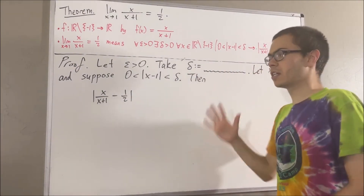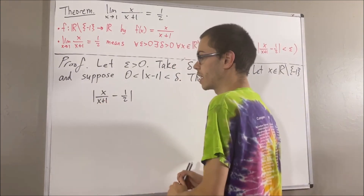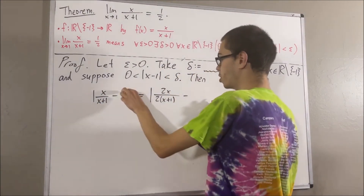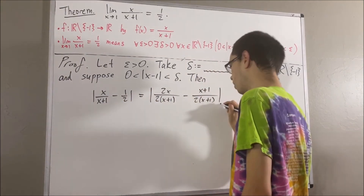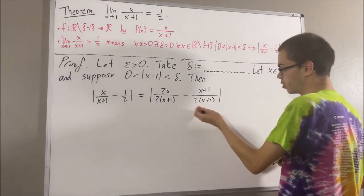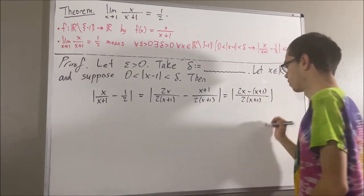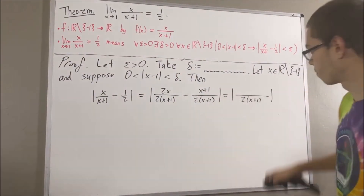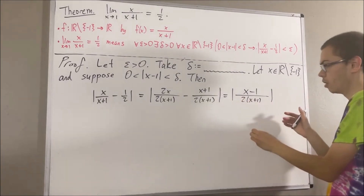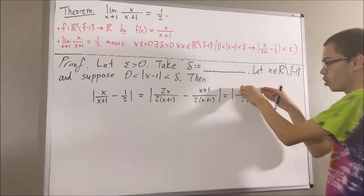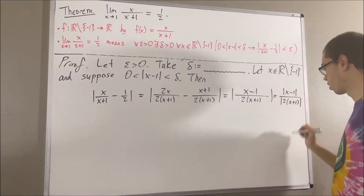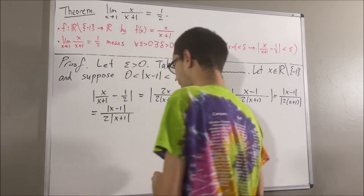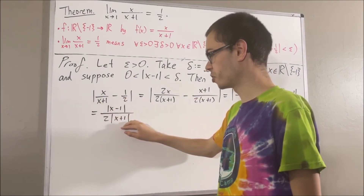Now to start, let's combine these two fractions into a single fraction. To do that, we'll multiply both the numerator and denominator of the first term by 2, and we'll multiply both the numerator and denominator of the second term by x plus 1. We have common denominators, so we can combine these into a single fraction. The numerator simplifies to x minus 1. And when we're taking the absolute value of a fraction, we can rewrite this as the absolute value of the numerator over the absolute value of the denominator, which gives us the absolute value of x minus 1 over 2 times the absolute value of x plus 1.